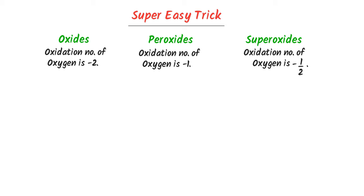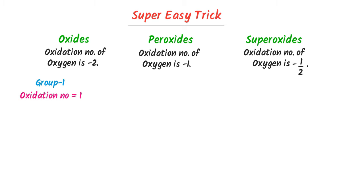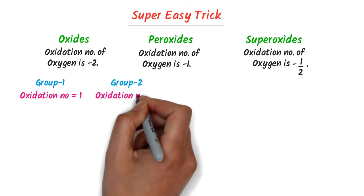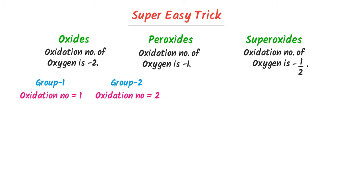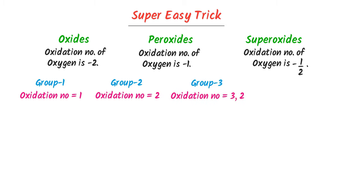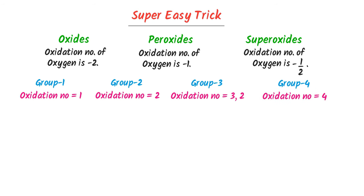Generally, the oxidation state of group 1 elements is 1, the oxidation state of group 2 elements is 2, the group 3 elements is 3 or 2, and the group 4 elements is 4.